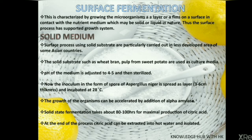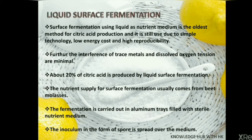Moving on to solid medium, the first type of surface fermentation. Solid substrate surface processes are particularly carried out in less developed areas of some Asian countries. Solid substrates such as wheat bran and pulp from sweet potatoes are used as culture media. The pH of the medium is adjusted to 4 to 5 and then sterilized. The inoculum in the form of spores of Aspergillus niger is spread as a layer of around 3 to 6 cm thickness and incubated at 28 degrees Celsius. The growth of organisms can be accelerated by the addition of alpha-amylase. Solid substrate fermentation takes about 80 to 100 hours for maximal production of citric acid. At the end of the process, citric acid can be extracted into hot water and isolated. The recovery will be studied at the end as it is similar for all methods.